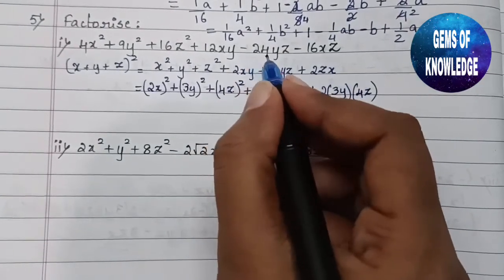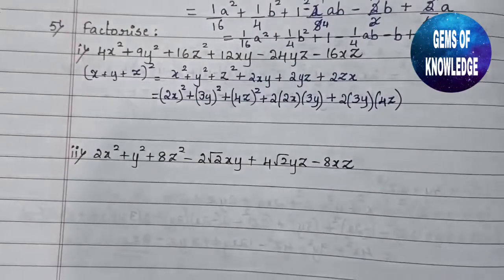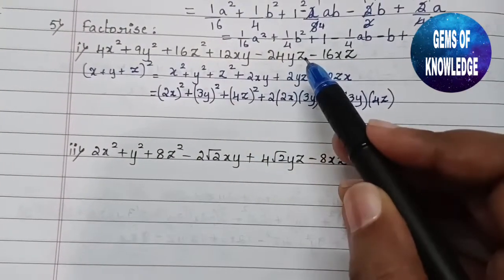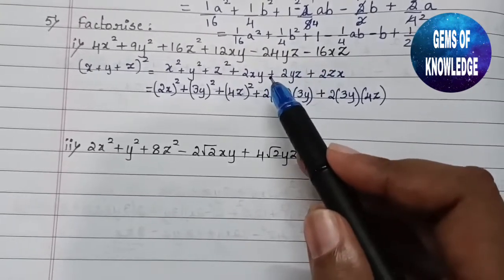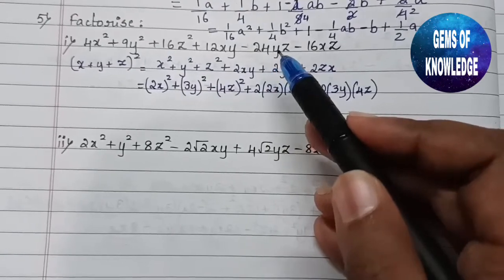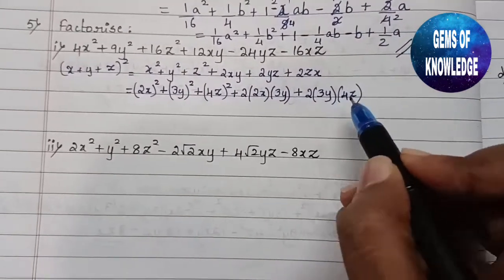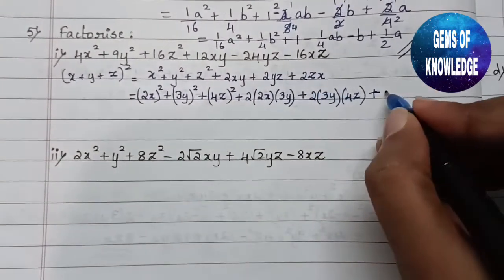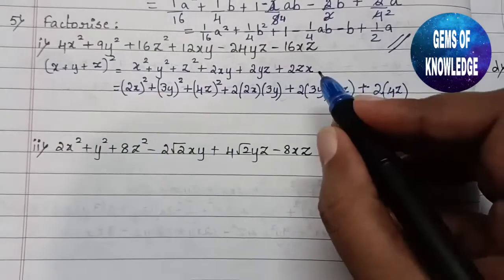We got 24yz but the question has −24yz, so one of these two terms must carry a minus sign — either y is minus or z is minus. Moving to the last cross term, the formula gives 2zx. Our z is 4z and x is 2x, so 2 × 4 × 2 = 16, giving 16zx — but in the question this is also minus, giving −16zx.